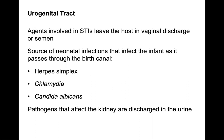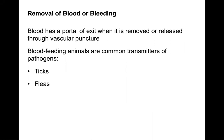Agents involved in STIs leave the host through vaginal discharge or semen, and can also be a source of neonatal infections as the infant passes through the birth canal — including herpes, chlamydia, and Candida albicans. Pathogens that infect the kidney are typically discharged through the urine. Blood is also a portal of exit when removed through vascular puncture; blood-feeding animals like ticks and fleas are common transmitters of pathogens.